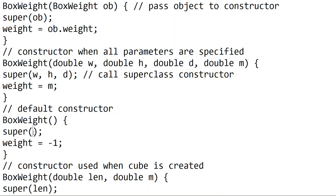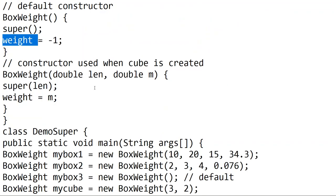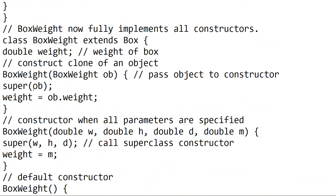When we use the default Box constructor, all the values are minus 1. So weight is also set to minus 1. When we have the cube constructor, height is set to the same value. We call super with the length parameter. The super keyword connects the super class and the subclass — we have the subclass and the parent class.